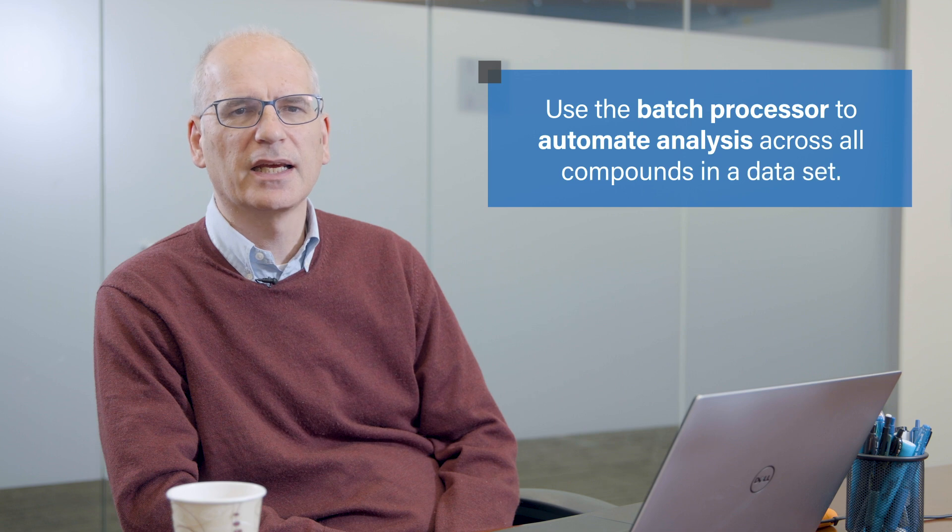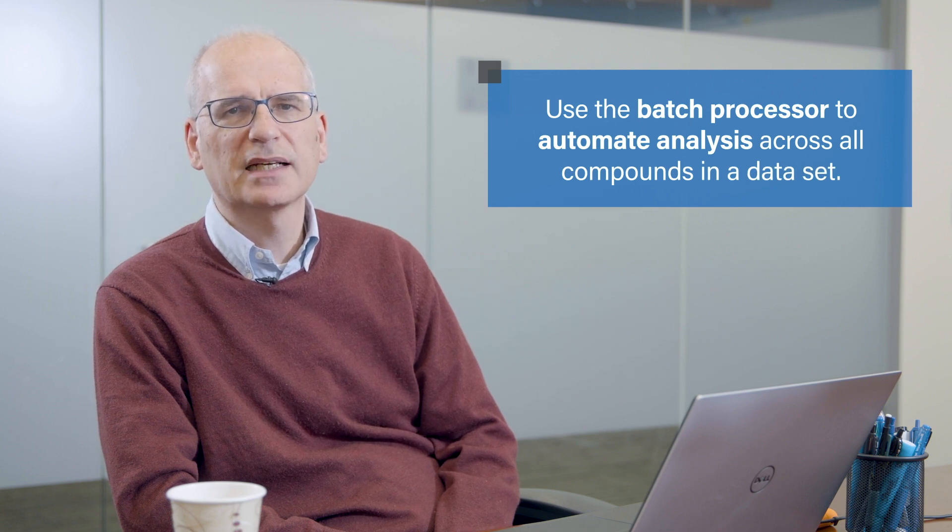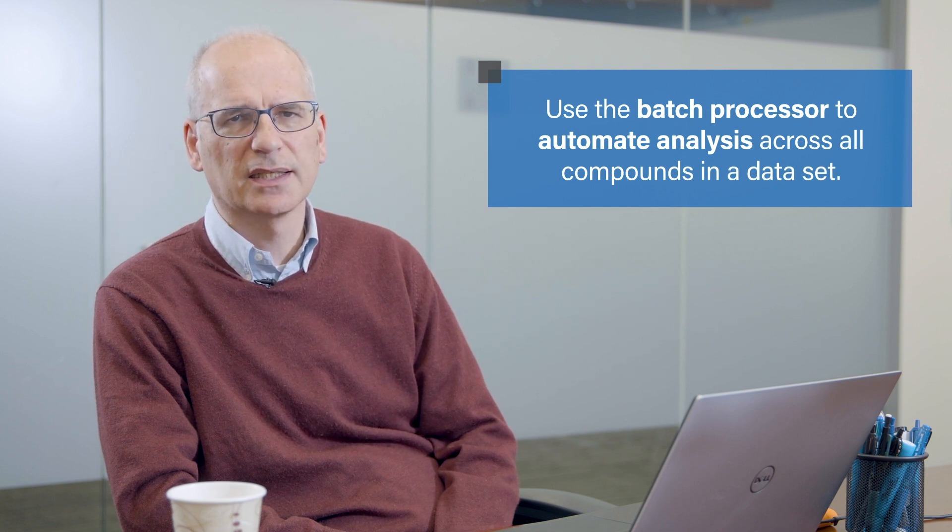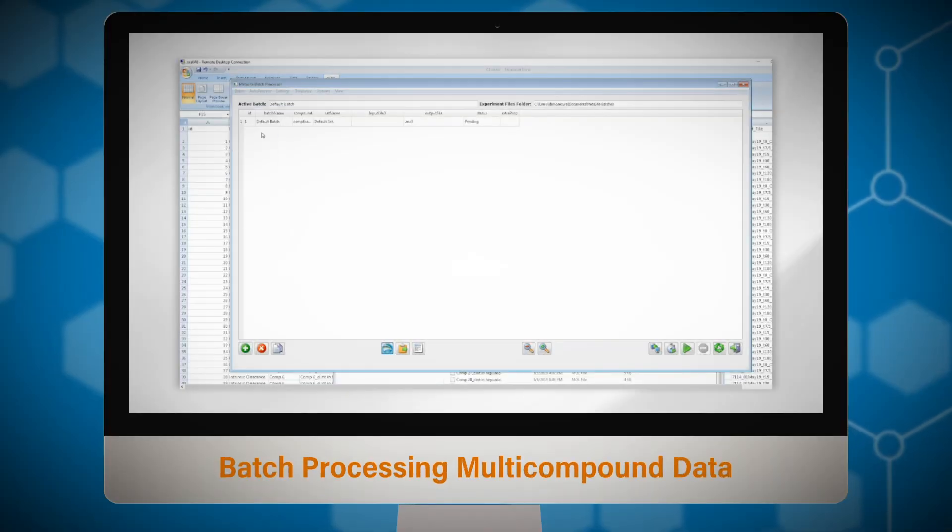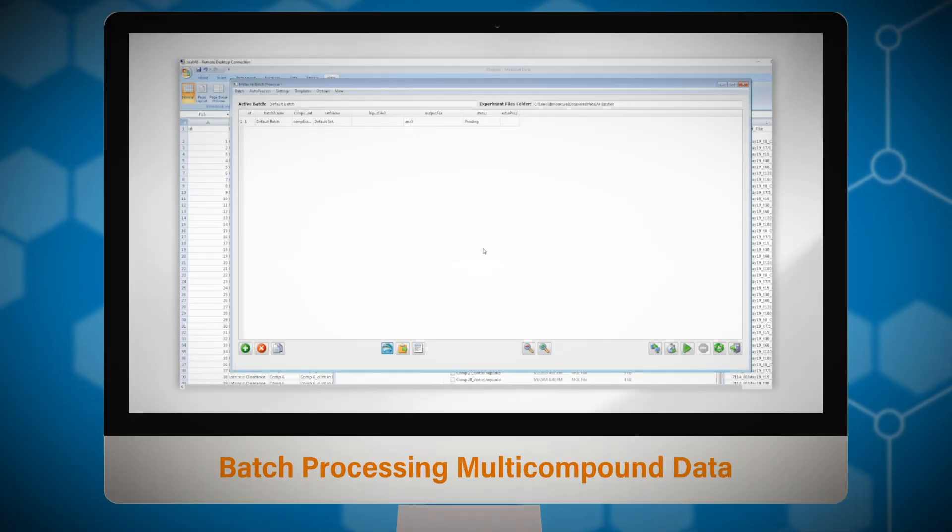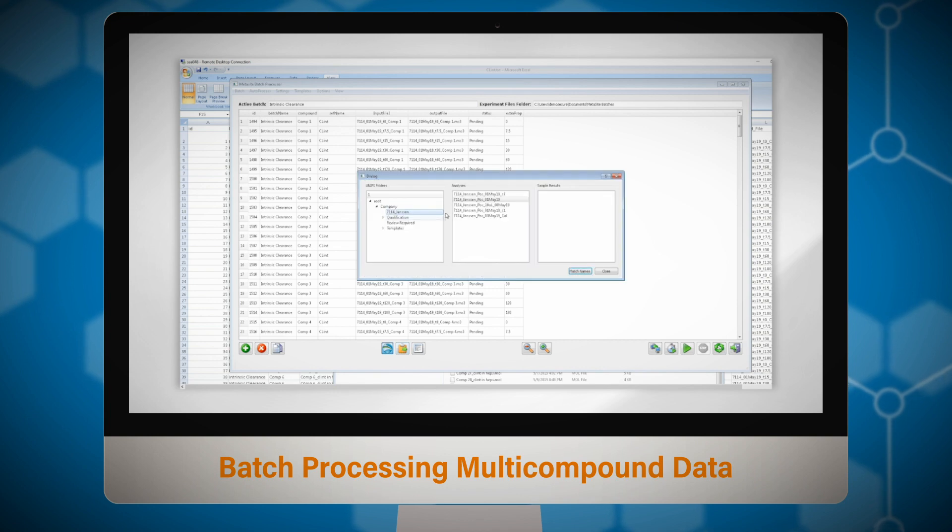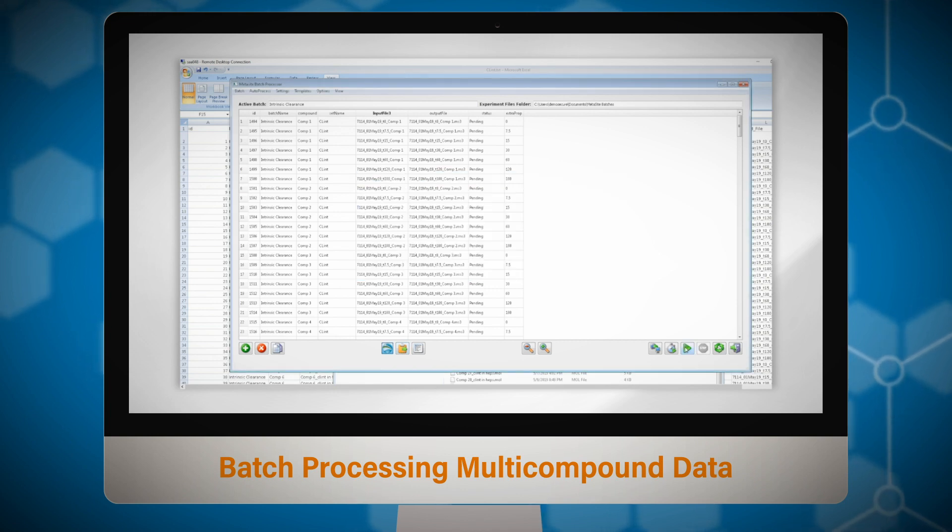What we've just seen is an analysis for one compound. When processing a full assay we use the batch processor to automate analysis across all compounds in the assay. The sample table can be automatically created for a 96 well plate and then populated with the relevant files via the connection to UniFi.